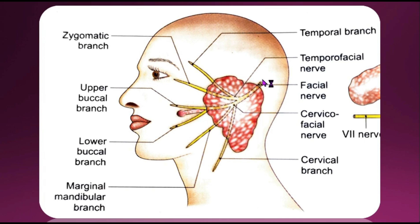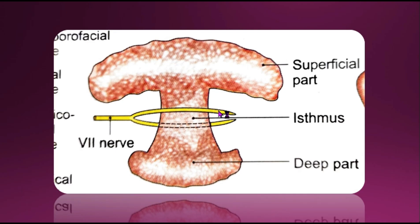The facial nerve exits the cranial cavity through the stylomastoid foramen and enters the gland through the upper part of its posteromedial surface, dividing into terminal branches within the gland. The branches leave through its anteromedial surface and appear at the anterior border. The facial nerve divides into the temporofacial branch and the cervicofacial branch. The temporofacial divides into temporal and zygomatic branches; the cervicofacial divides into buccal, marginal mandibular, and cervical branches. There is a large superficial part and small deep part connected by an isthmus around which the facial nerve divides.